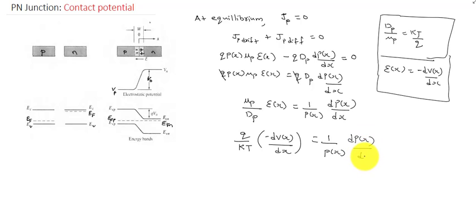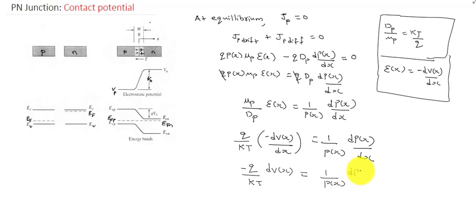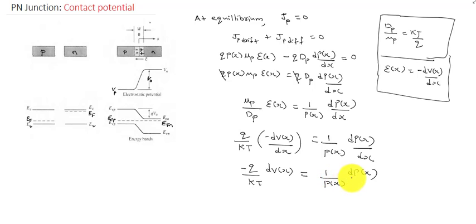Rearranging, we can write: minus Q/KT·dV(x) = (1/P(x))·dP(x). Here V(x) is the variable on the left side and P(x) is the variable on the right side. We are going to integrate both sides to obtain the value of the contact potential.